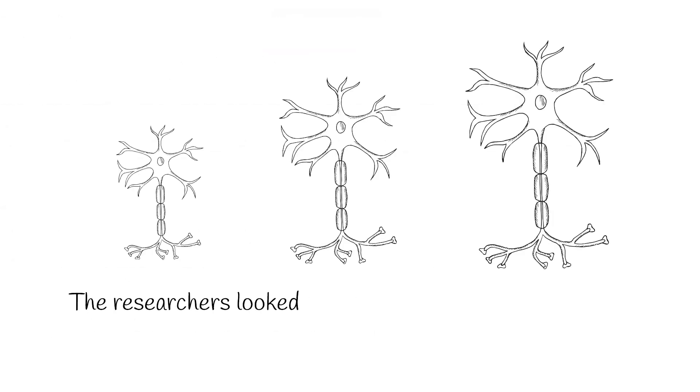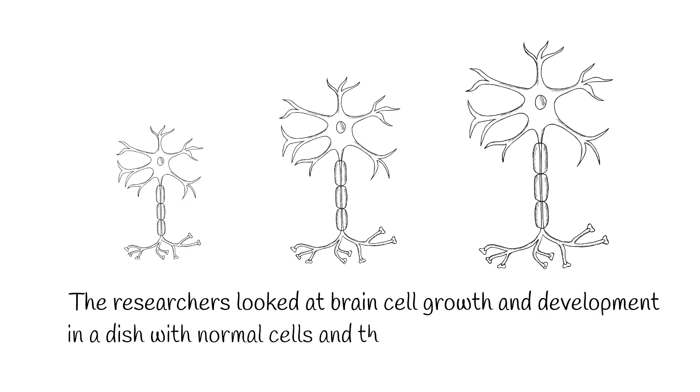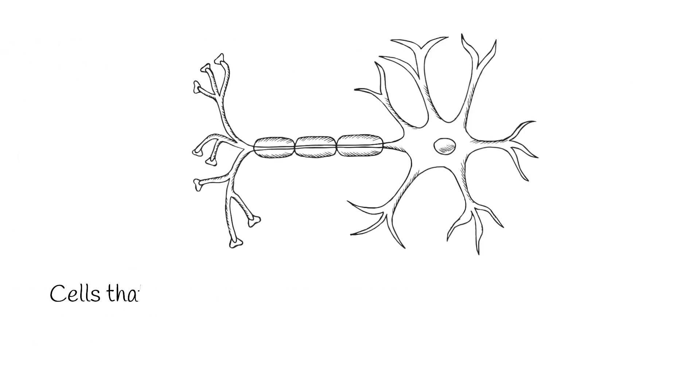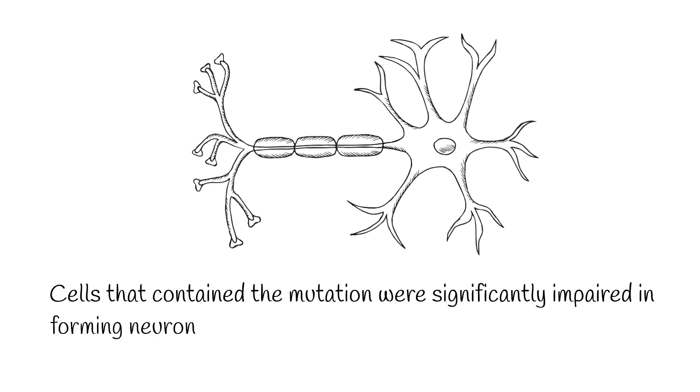The researchers looked at brain cell growth and development in a dish with normal cells and the mutated cells. Cells that contained the mutation were significantly impaired in forming neurons.